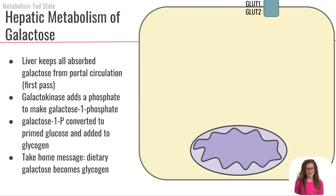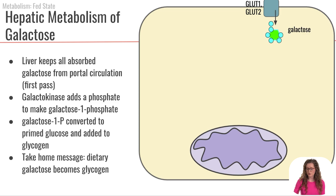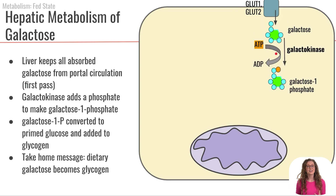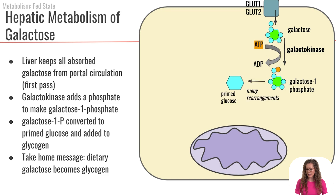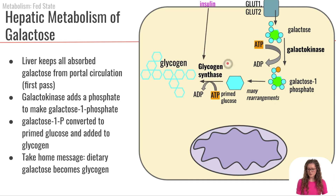Now let's look at what happens to galactose in the liver. The liver keeps all of the galactose absorbed from our meal. Galactose enters the liver through either GLUT1 or GLUT2, just like glucose. From there, galactokinase adds a phosphate group to trap galactose inside the cell. That galactose-1-phosphate can then undergo many rearrangements to become primed glucose, which glycogen synthase uses to form glycogen — the same process of glycogenesis.